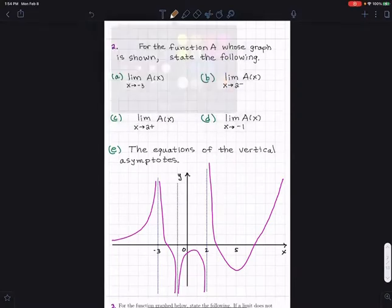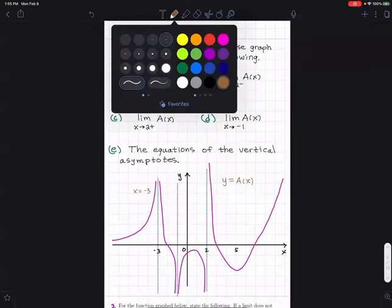Let's start off with part (a): the limit of A(x) as x approaches negative three. As we can see, at x equals negative three, this is a vertical asymptote. In general, I'll say the limit doesn't exist, but we are also looking at infinite limits. There is an infinite limit here.